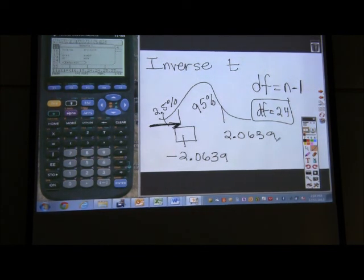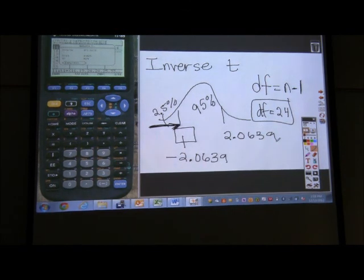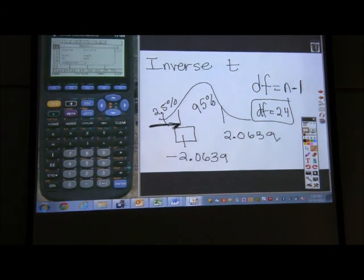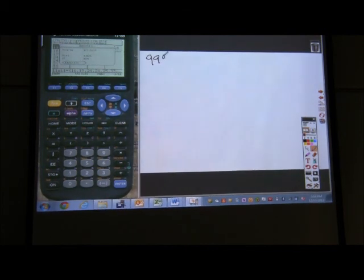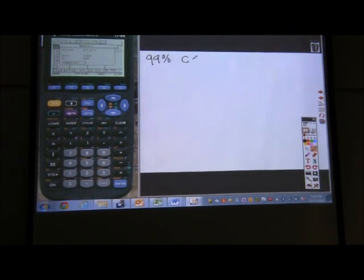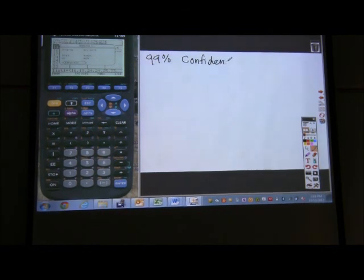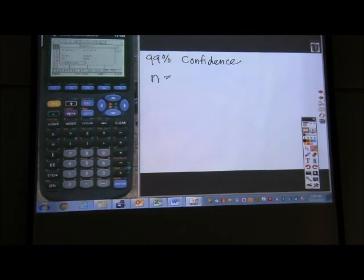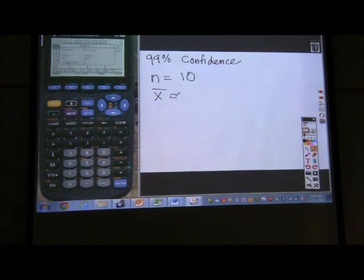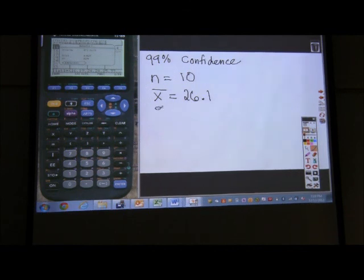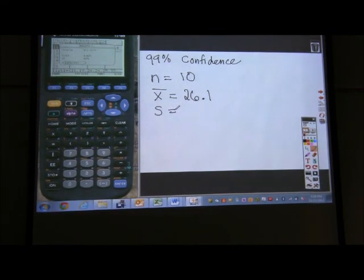Alright. A sample of 10 networking sites for a specific month has a mean of 26.1 and a sample standard deviation of 4.2. Find the 99% confidence interval for the true mean. So this is one of the numbers that I need to do the problem. I need to know that I'm looking for the 99% confidence level. I need to know that my sample size of these networking sites is 10. I need to know what my sample mean is. My sample mean is 26.1. I need to know what my sample standard deviation is. My sample standard deviation is 4.2.